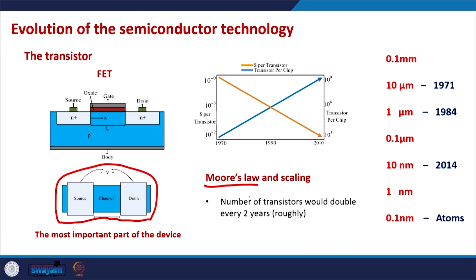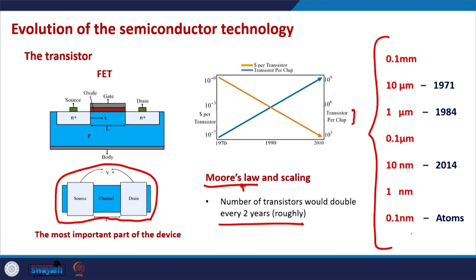Moore's law is an empirical observation by Moore seeing the trends in industry. It says that the number of transistors per chip will double almost every 2 years and as a consequence the cost per transistor will go down. In the 1970s when IC technology was getting refined, the size of transistors was in tens of micrometers.